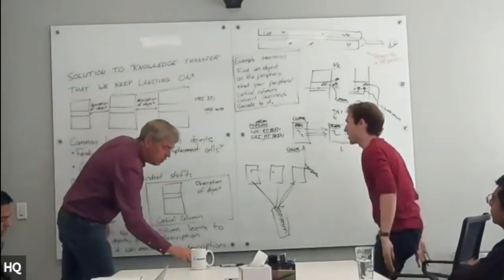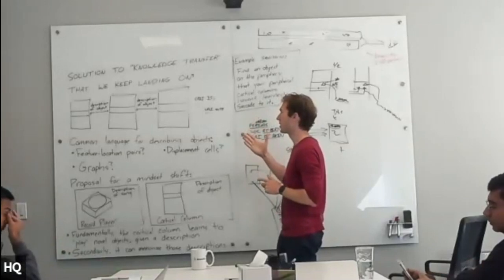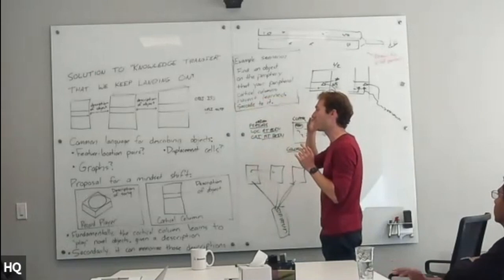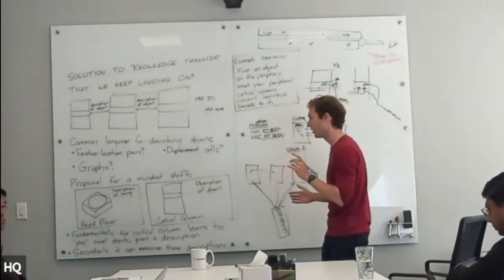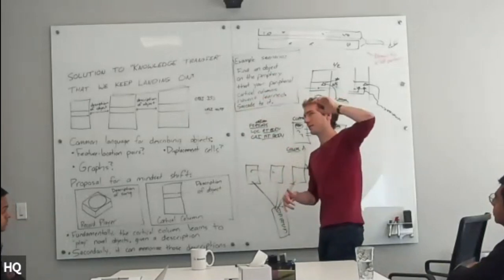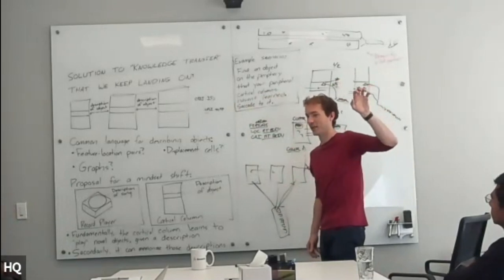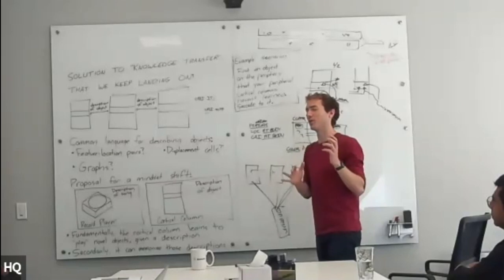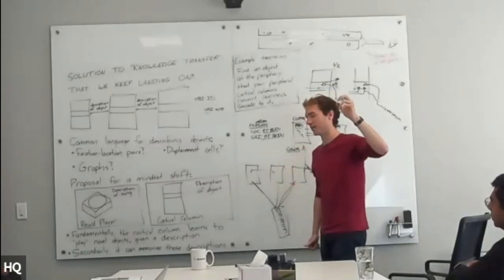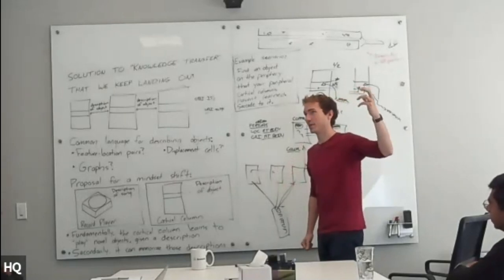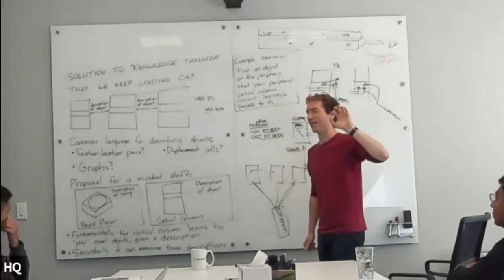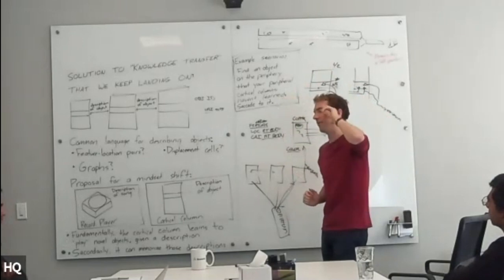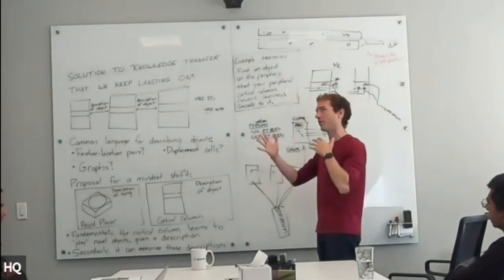I'm going to try to make the most radical version of this claim and see if you still agree. This is a slightly different flavor of the thousand brains theory that's compatible with it. When I think of a cortical column processing input from your periphery somewhere off to the side — the idea that that cortical column is learning entire models of objects — I don't disagree with it, but it's not the narrative that works for me. The narrative that works for me is: what it is fundamentally doing is learning to represent entire models of objects — that is the fundamental thing.